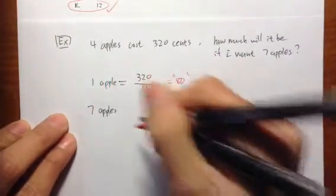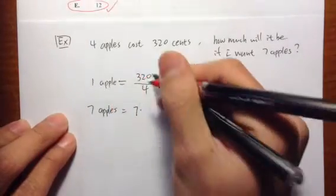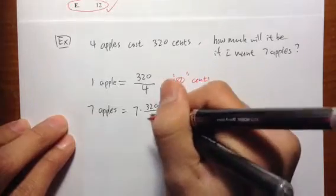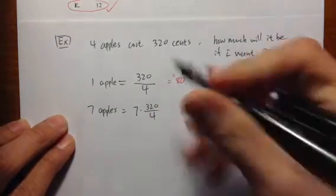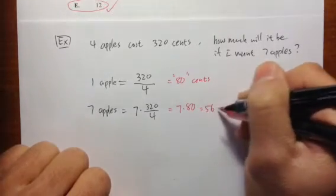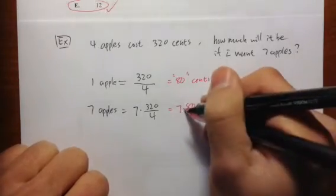To find out seven apples, all I need to do is multiply by seven times this, 320 over 4. And that's exactly what we do for seven times 80, which gives you 560 cents, five dollars and 60 cents.